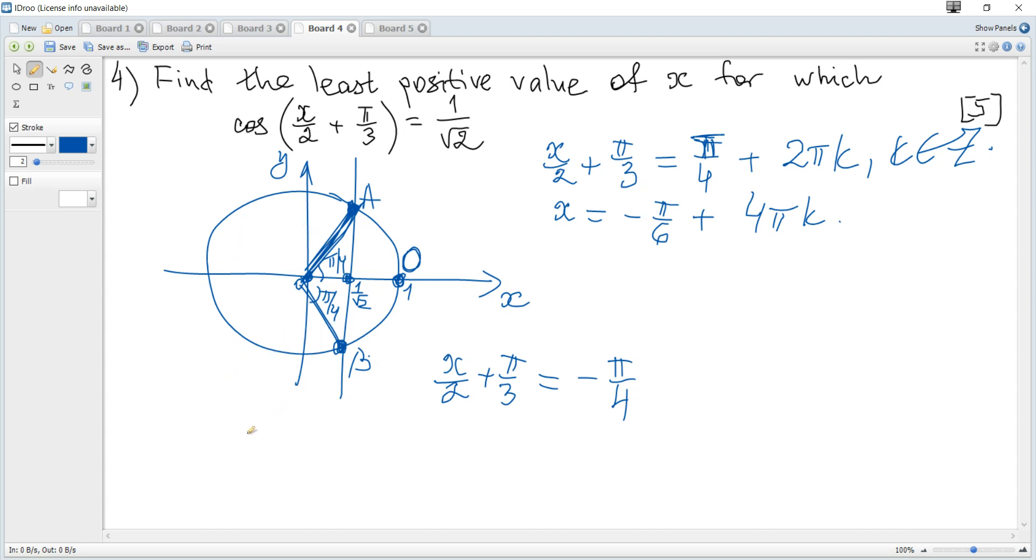Actually, if we consider the anti-clockwise direction, this angle is 2π minus π/4. But it's not required because with 2πk, if you consider k equal to 1, you obtain this angle after one revolution and get this angle as positive.